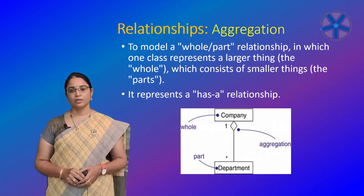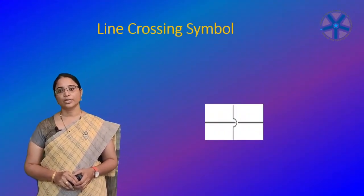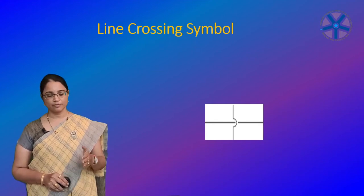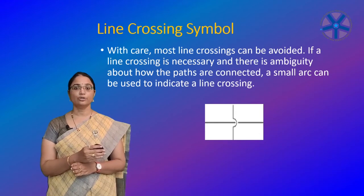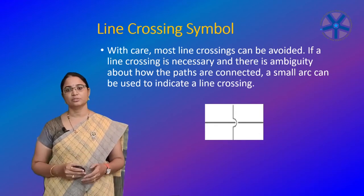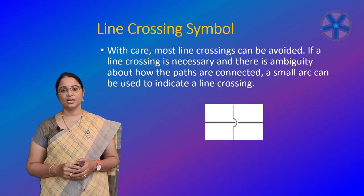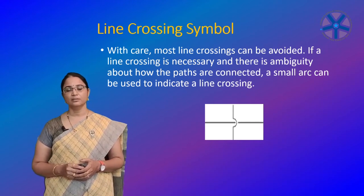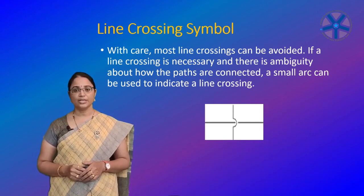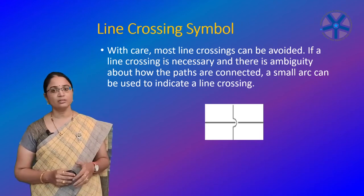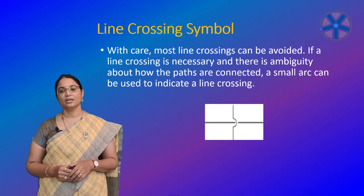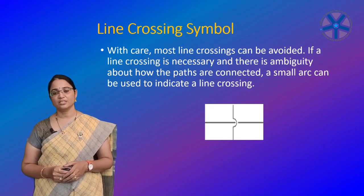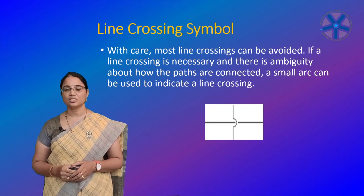An important point: most line crossings can be avoided. If a line crossing is necessary and there is ambiguity about how the paths are connected, a small arc can be used to indicate the line crossing — similar to how line crossings are represented when drawing circuits.